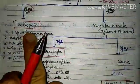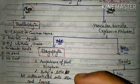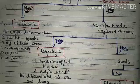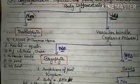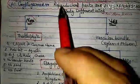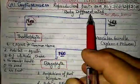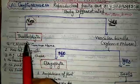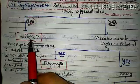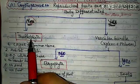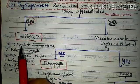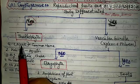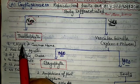We will read each division individually in separate videos. Thallophyta is the first division and is commonly known as algae. These plants are typically found in water.